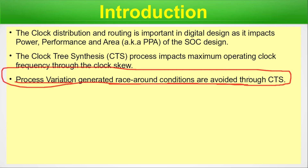Process variation generated race-around conditions are avoided through CTS — this is a very important point. We have an entire episode on process corners where we have talked about process variation; the link is provided in the description. Please go ahead and watch it in case you do not know about process variation, as those race-around conditions are avoided through CTS.